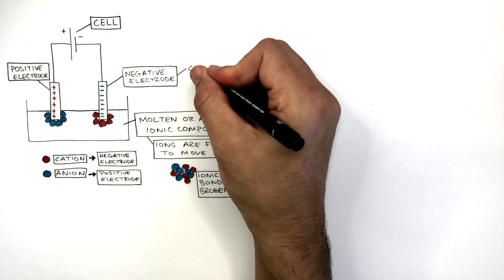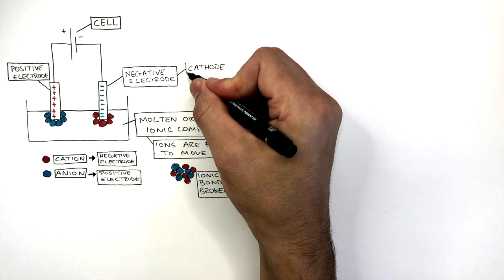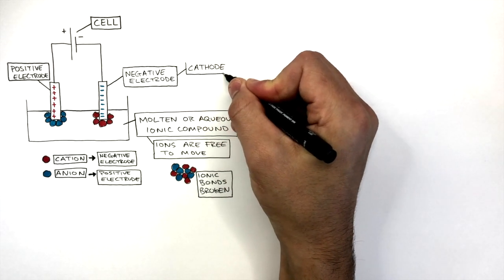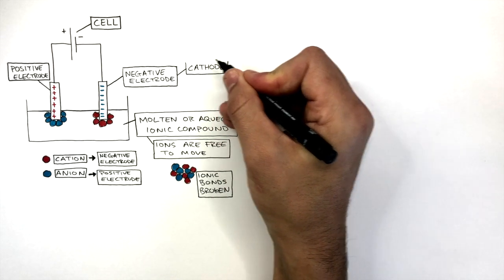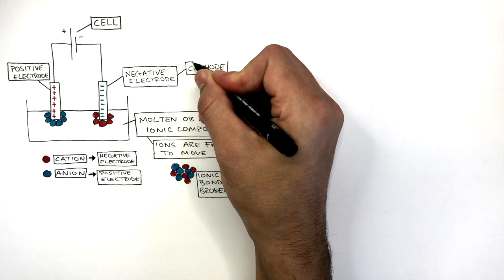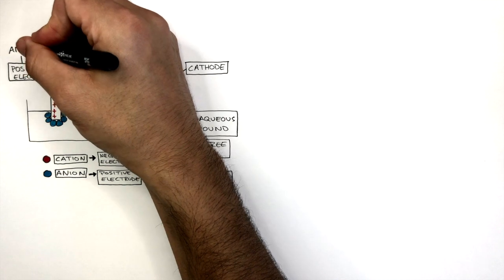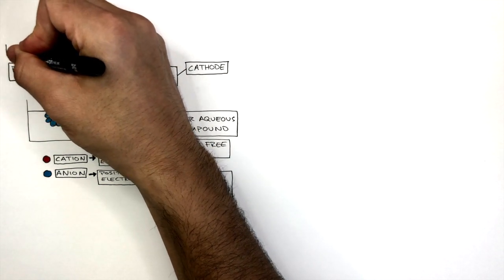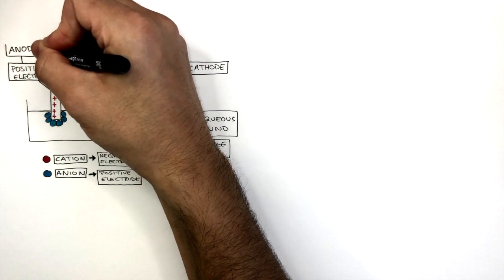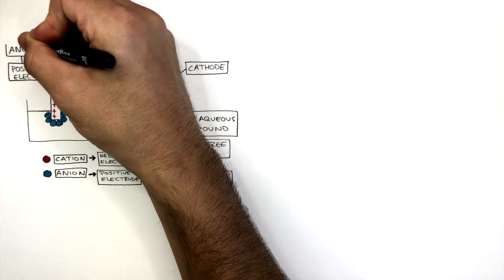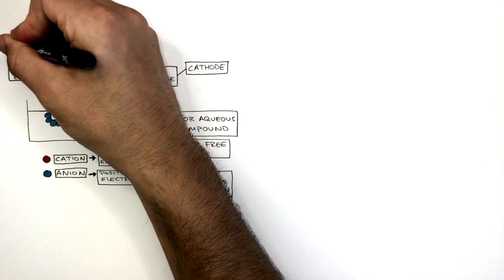The negative electrode is known as the cathode. Always think to yourself, cation, cathode, the cation is attracted to the cathode. And the positive electrode is known as the anode. Always think to yourself, anion, anode, the anion is always attracted to the anode.